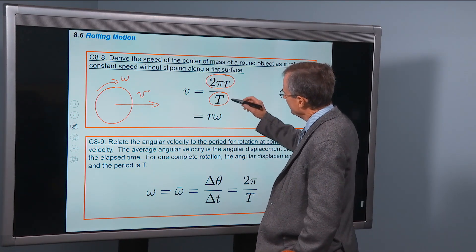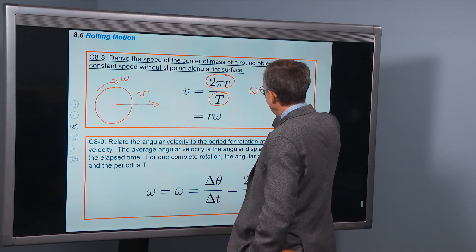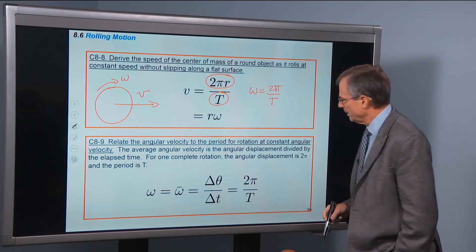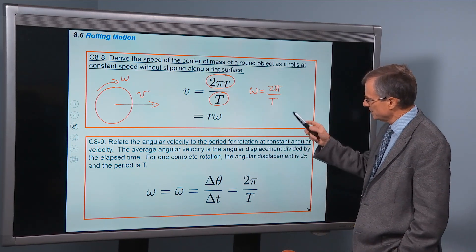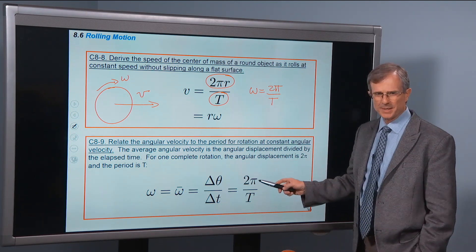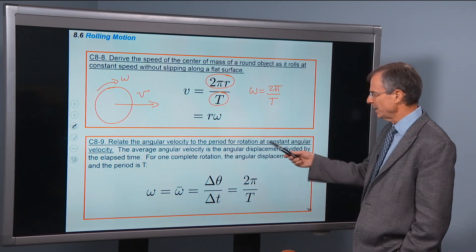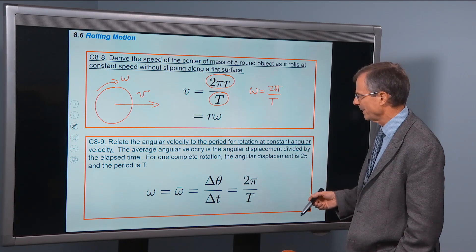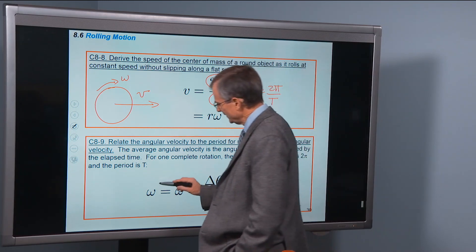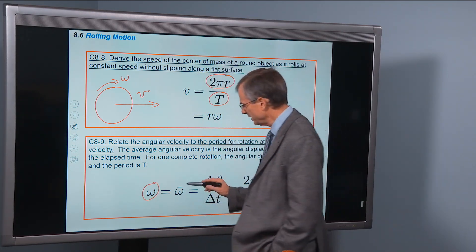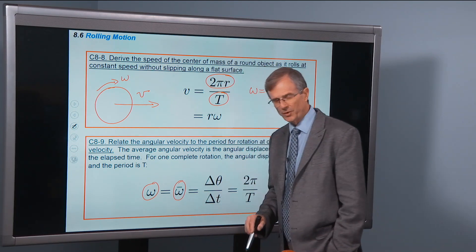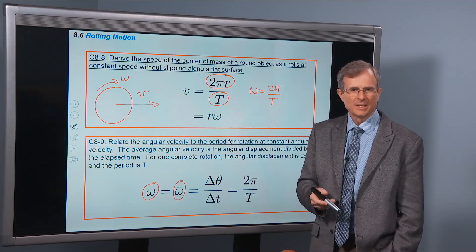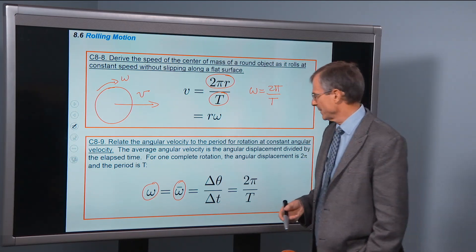And then we argued that omega is 2 pi over the period. Now I'm actually going to skip down into this concept, and then finish this one up here. Relate the angular velocity to the period of rotation at constant angular velocity. So if the instantaneous angular velocity is equal to the average angular velocity, that means that the angular velocity isn't changing with time. It's rotating at the same speed as a function of time.